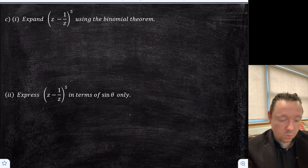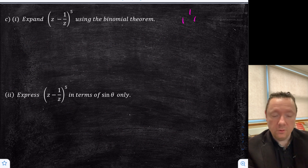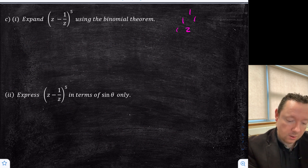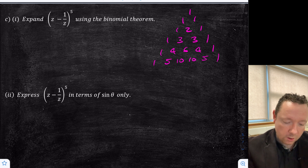Part C: expand (z − 1/z)^5 using the binomial theorem. I'm going to set up Pascal's triangle to help. The relevant row for power 5 is: 1, 5, 10, 10, 5, 1. So it's this line I want.